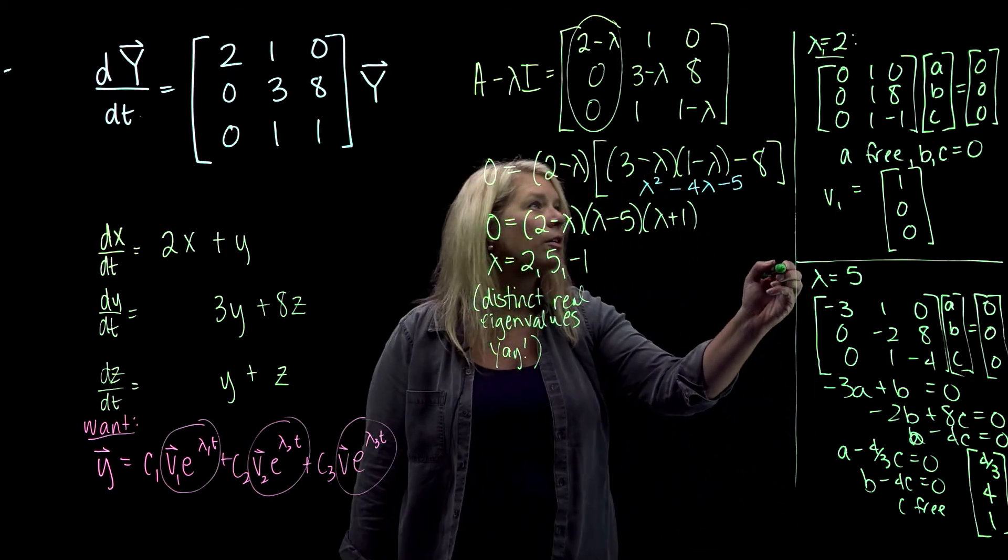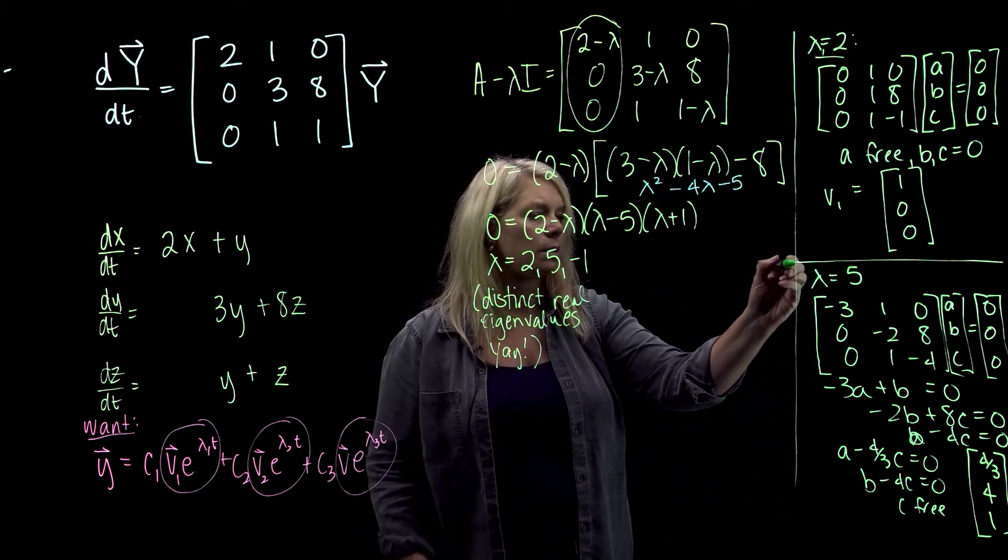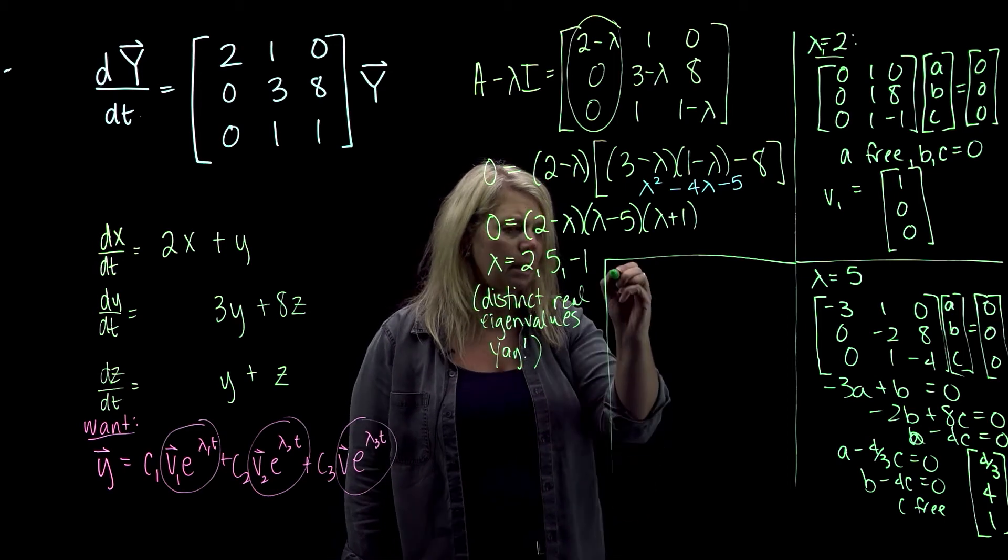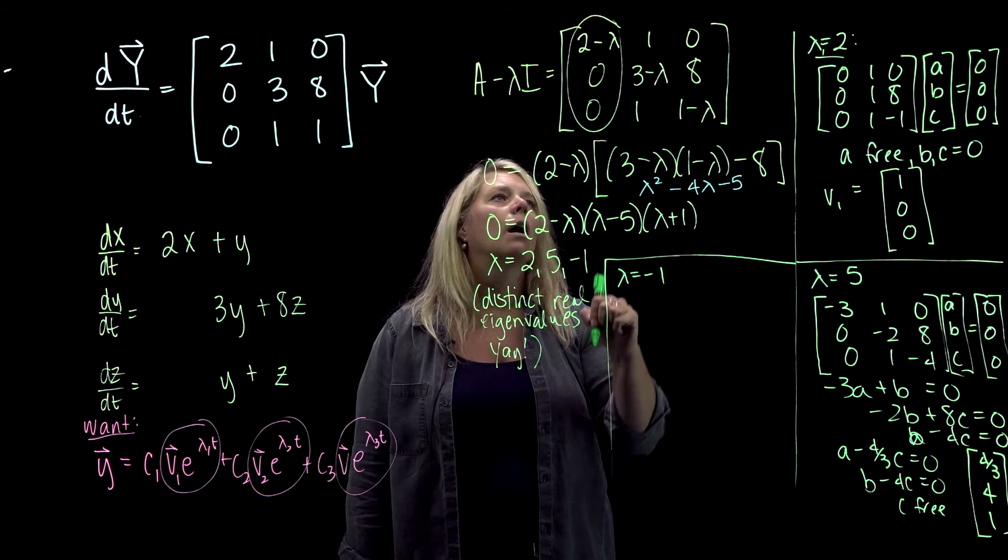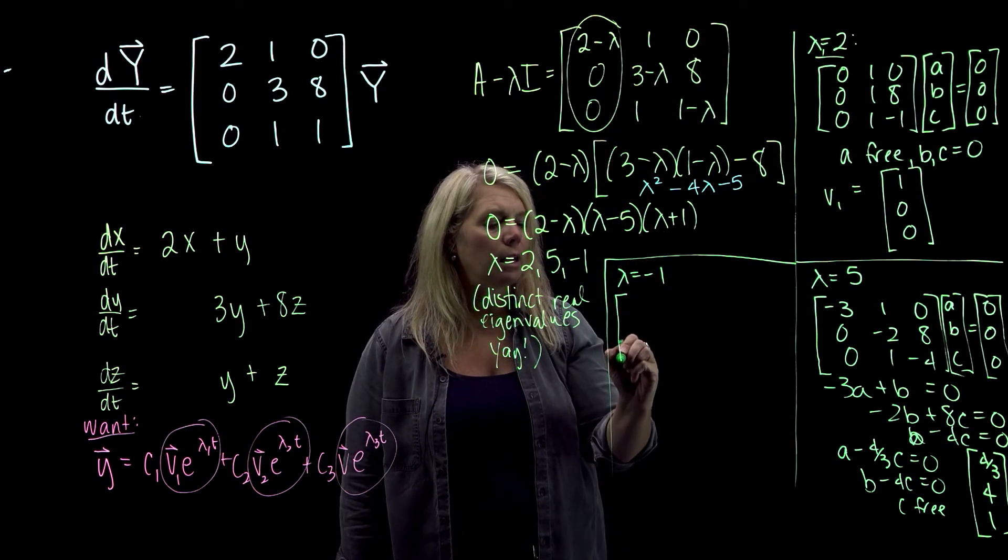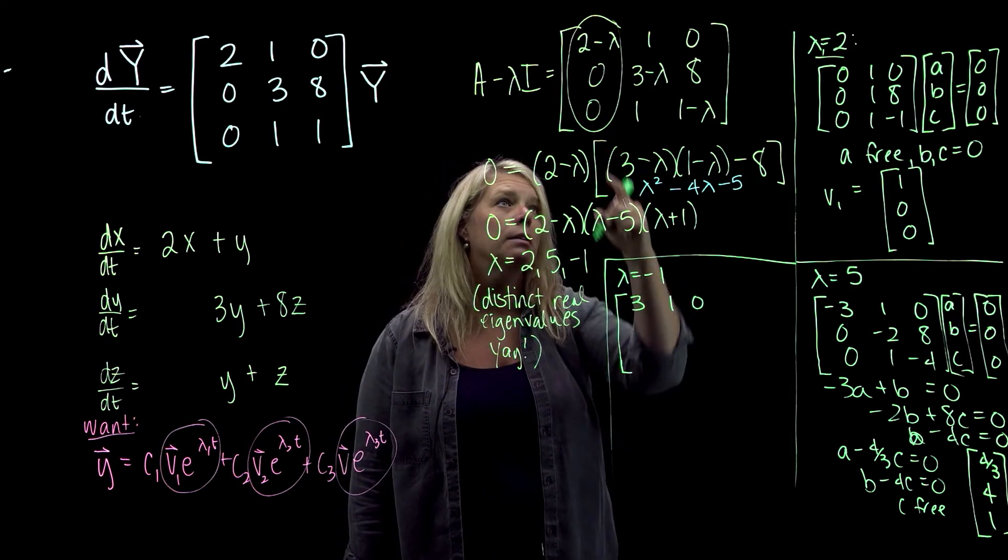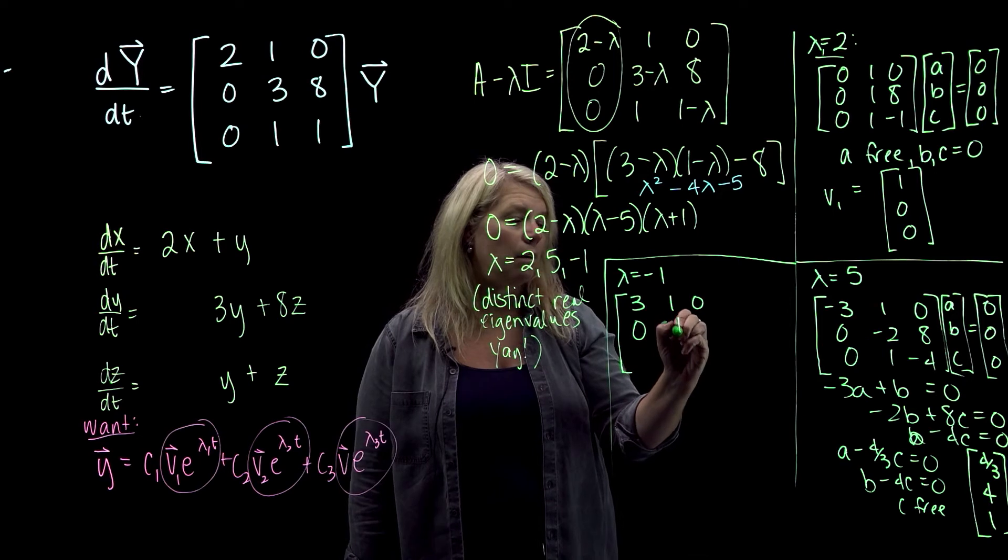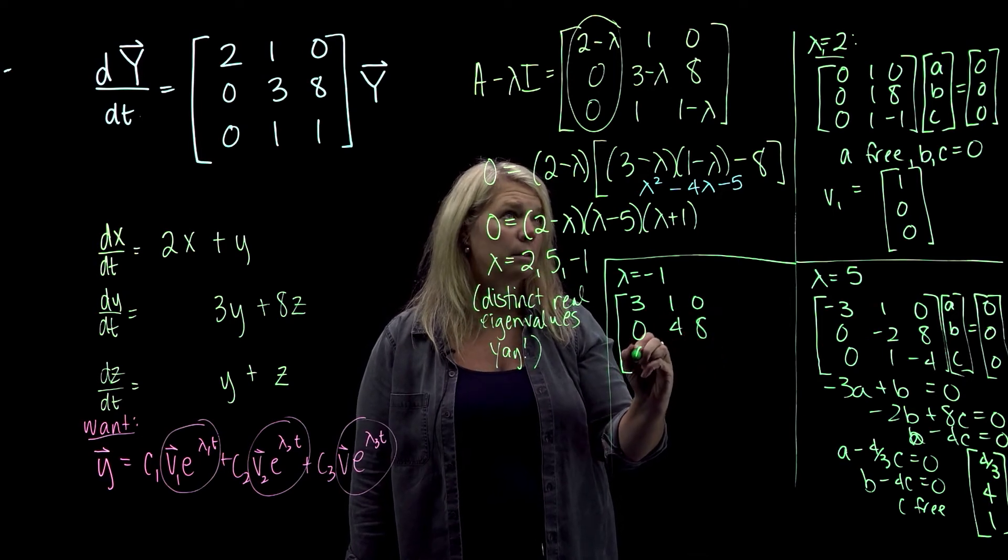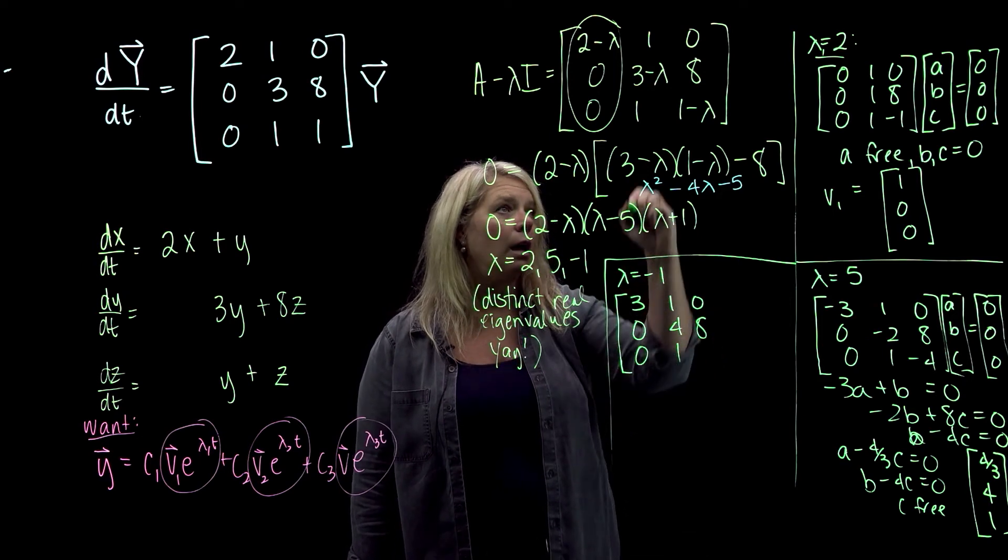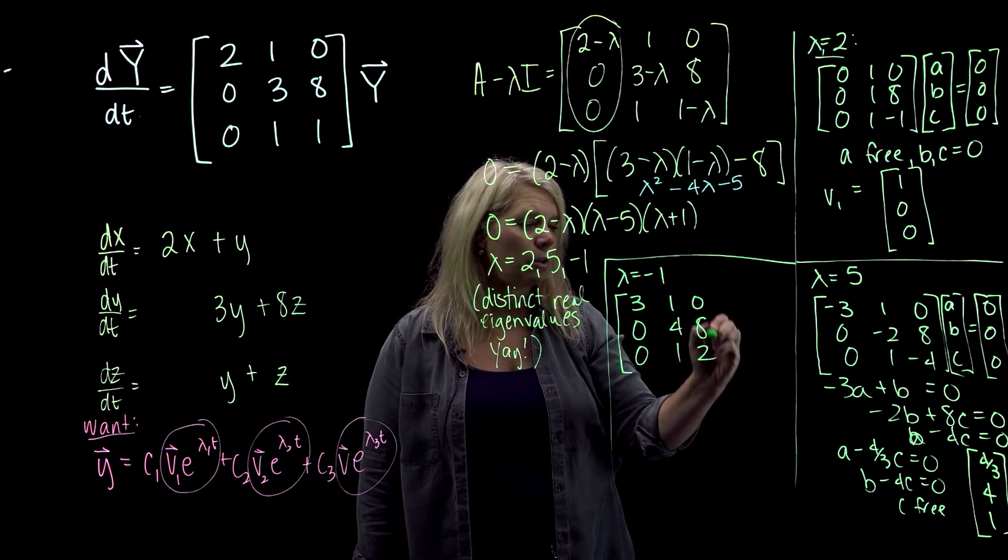Alright, and then I got one other one to do here. Lambda equals negative 1. Let's see if we can fit that in here. Alright, so lambda equals negative 1. In our matrix we will have [3, 1, 0; 0, 4, 8; 0, 1, 2]. And what I'm looking for is the vector ABC.